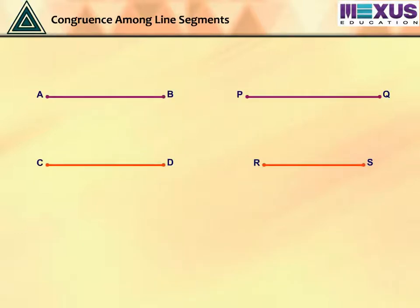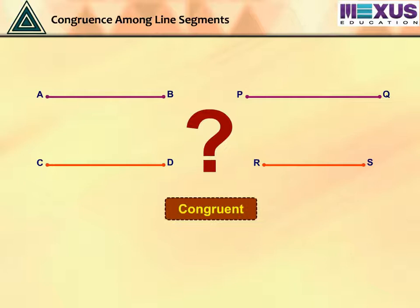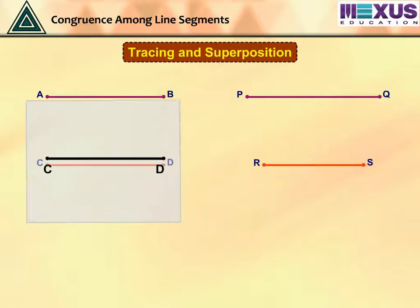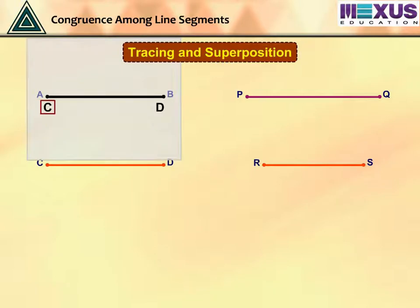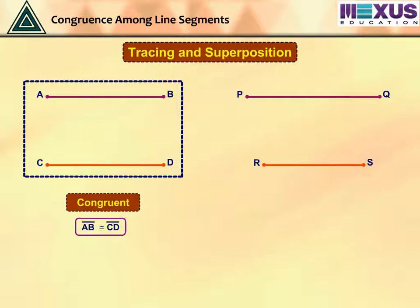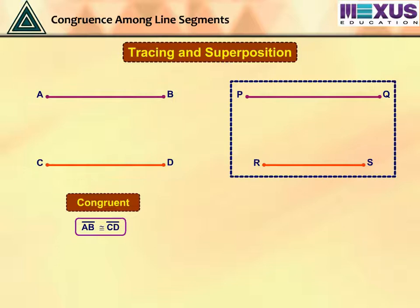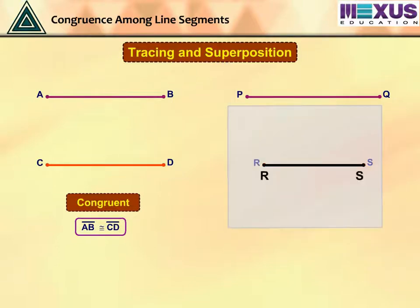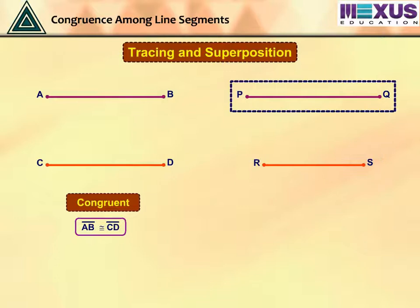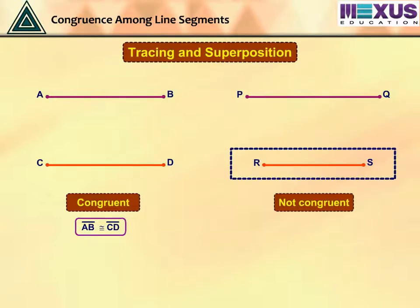Look at these two pairs of line segments. Let us check whether they are congruent by using the same method of tracing and superposition. Copy CD and place on AB. You will see that CD completely covers AB with point C on point A and point D on point B. Hence, the line segments are said to be congruent, and it can be written as line segment AB is congruent to line segment CD. Let us check for another pair. If we trace RS on PQ, you will notice that the endpoints do not coincide. Therefore, line segment PQ is not congruent to line segment RS.